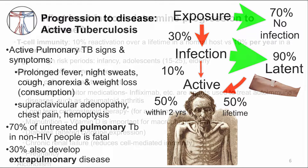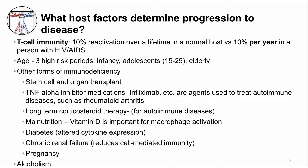What determines whether a person does or does not progress to active TB disease? The answer is not completely known. Something disrupts the granuloma, disturbing the standoff between MTB and the host immune response. This disruption can be observed more often in certain types of hosts, so we can recognize that some people are at higher risk of progressing from latent infection to active TB disease. For example, HIV-AIDS increases the risk of progression to TB disease by an enormous amount. An HIV infected person has a 10 percent chance of progressing to TB disease per year, compared to an immunocompetent person who has a 10 percent chance of progressing to TB disease over a lifetime.